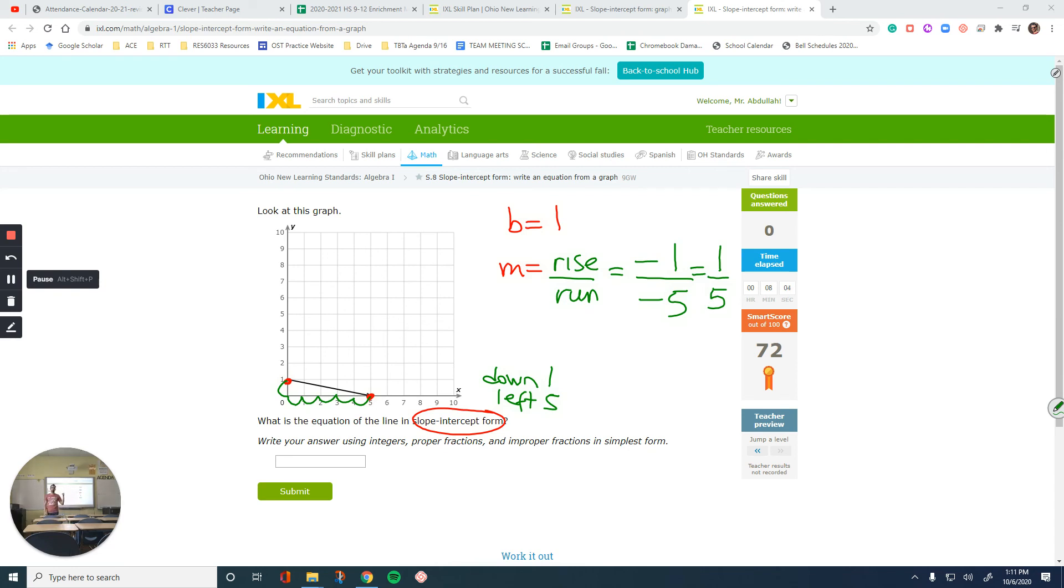And when you divide them, it gives you a decimal, which you don't want to have. So these are the numbers that we need. Remember, the general form of the slope-intercept form, which is y equals mx plus b. Rewrite your equation: y equals m is one-fifth times x plus b is one. So this would be our answer for that question.